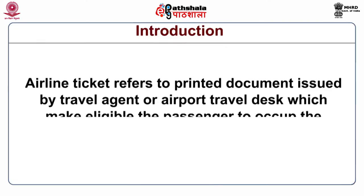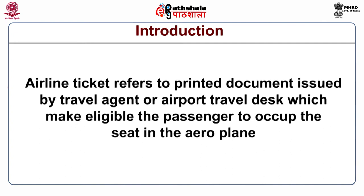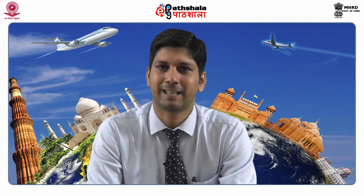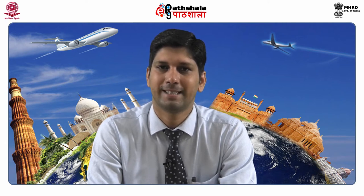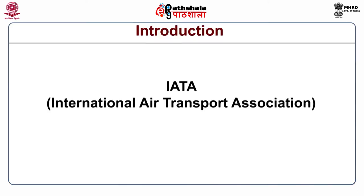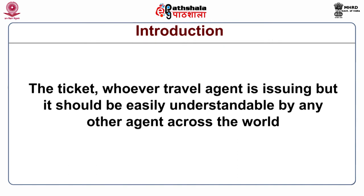An airline ticket refers to a printed document issued by a travel agent or airport travel desk which makes the passenger eligible to occupy a seat in the aeroplane. There are three main types of air tickets issued to passengers: an automatically copied ticket, an automatic coupon ticket with a boarding pass, and a manual form. The International Air Transport Association has made a rule that any ticket issued by a travel agent should be easily understandable by any other agent across the world.